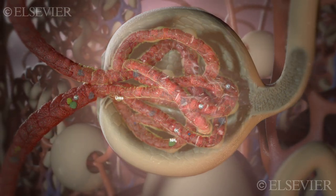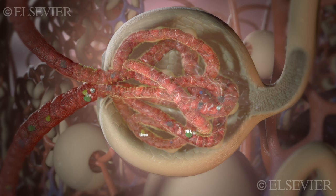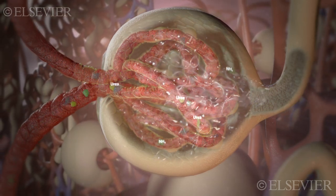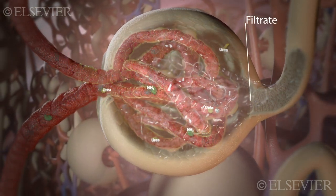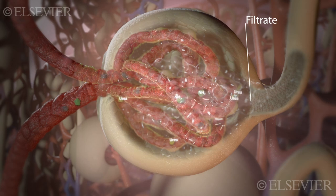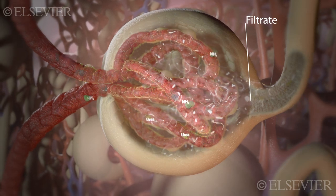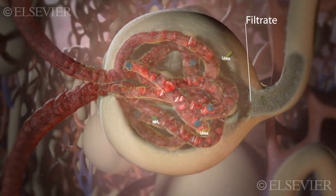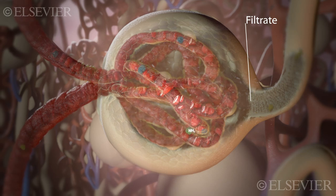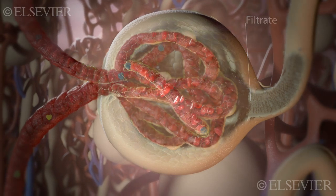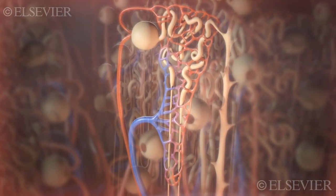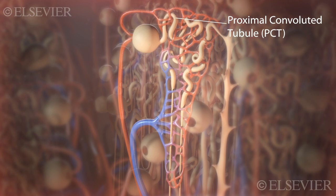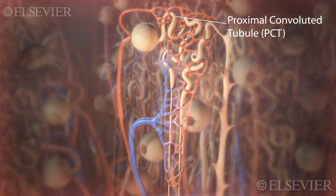Water, glucose, ions, and wastes are filtered into the hollow Bowman's capsule, forming a fluid called filtrate. Proteins and blood cells are too large to be filtered through the wall of the glomerular capillaries, so they remain in the blood. The filtrate travels through the proximal convoluted tubule, or PCT.